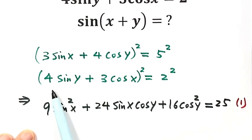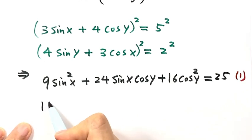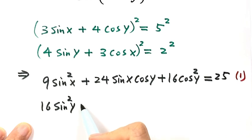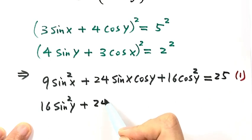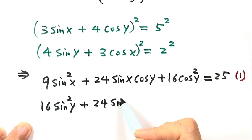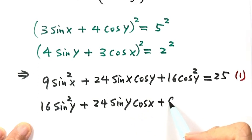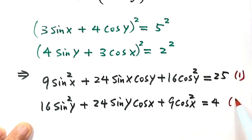Now let's expand the left-hand side of the second equation: 16 sin²y plus 2 times 4 times 3 — that's 24 — so 24 sin y cos x, plus 9 cos²x, then equals 4. Label this one as equation 2.